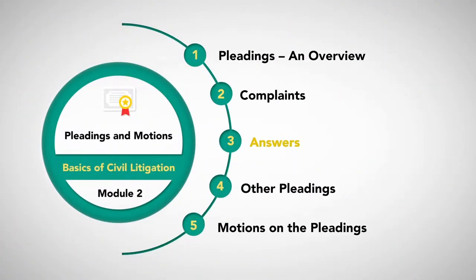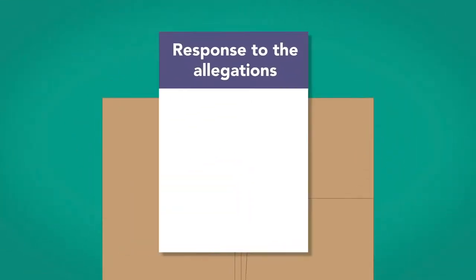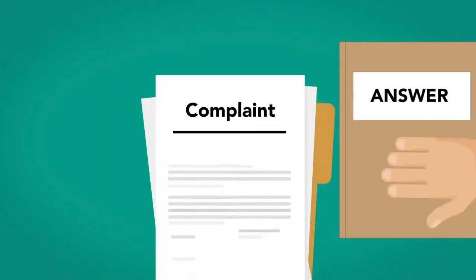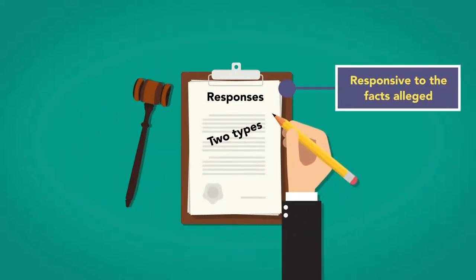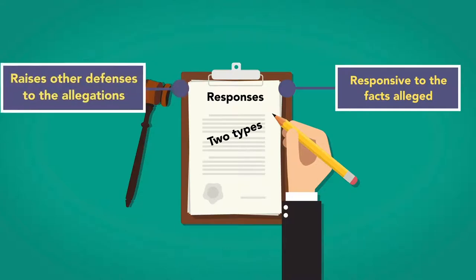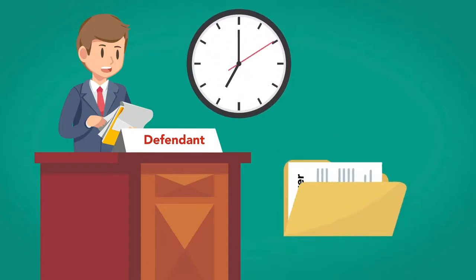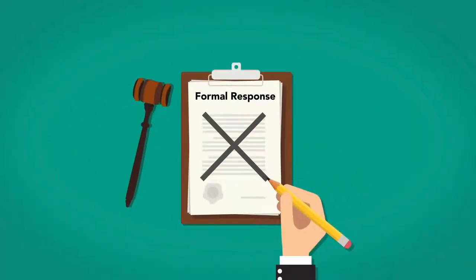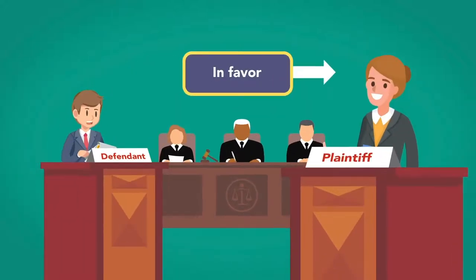Answers. The answer in a case is the defendant's response to the allegations in the complaint. It is another form of pleading, and so it must follow the same format as the complaint. There are two types of responses in an answer: the first is responsive to the facts alleged, and the second raises other defenses to the allegations. The defendant must file the answer within certain time limits. This time limit clock starts running when the defendant is served with the complaint. If the respondent does not formally respond to the allegations within these time limits, the allegations are considered to be true, and the case can be set for default judgment in favor of the plaintiff.